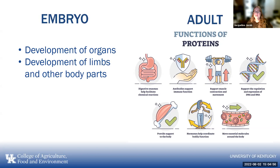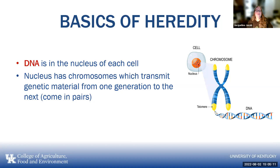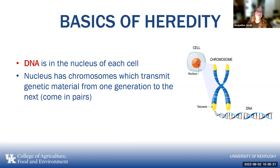Hormones are proteins, and molecules moving around the body are proteins. So proteins are key, and the key proteins are determined by DNA. The basics of heredity: DNA is in the nucleus of each cell. The nucleus has chromosomes, which transmit genetic material from one generation to another, and they typically come in pairs. A gene is a segment of DNA that is the basic unit of heredity — determining, for example, feather color or comb type — and genes come in pairs, one from the mother and one from the father.